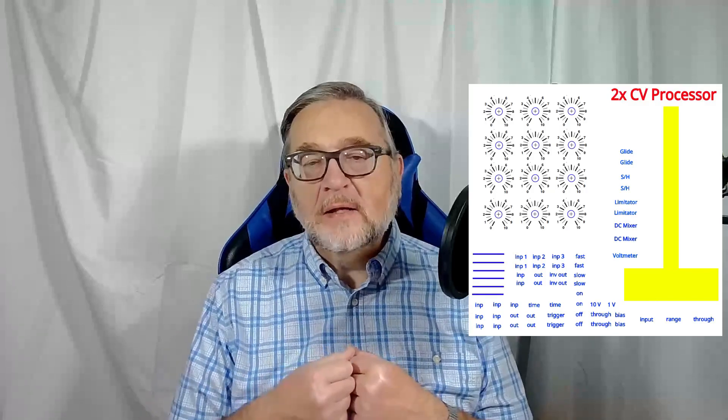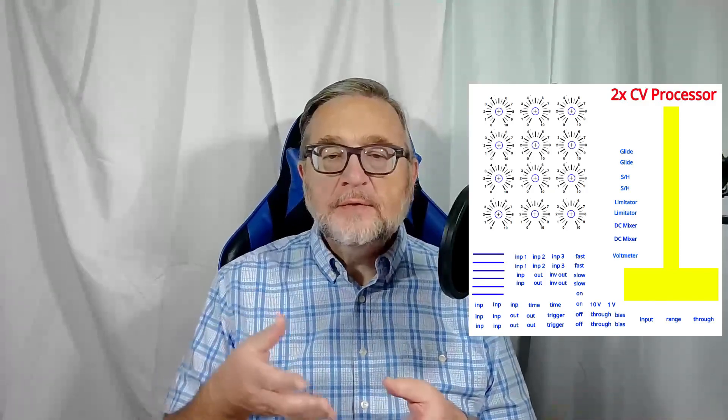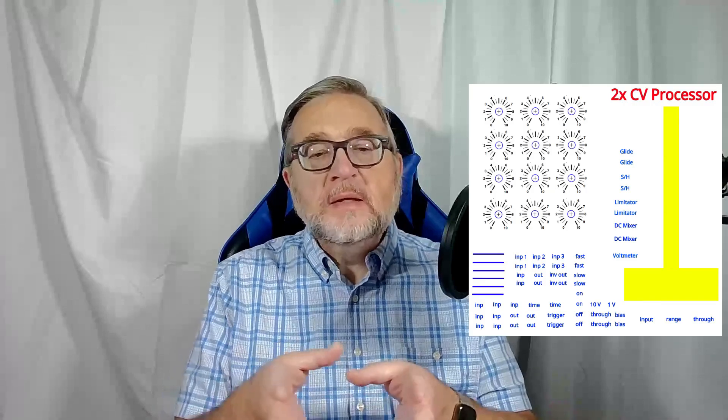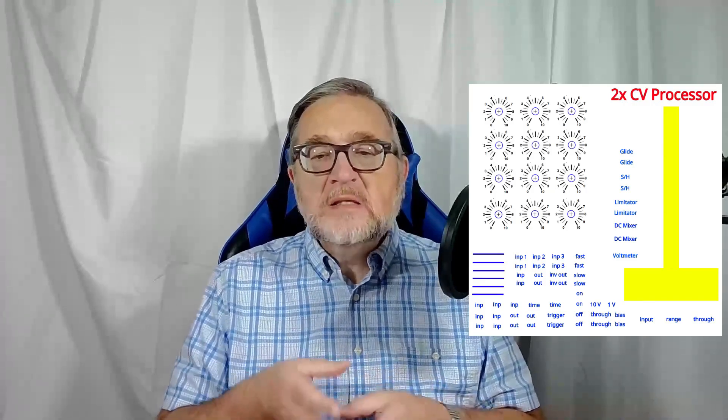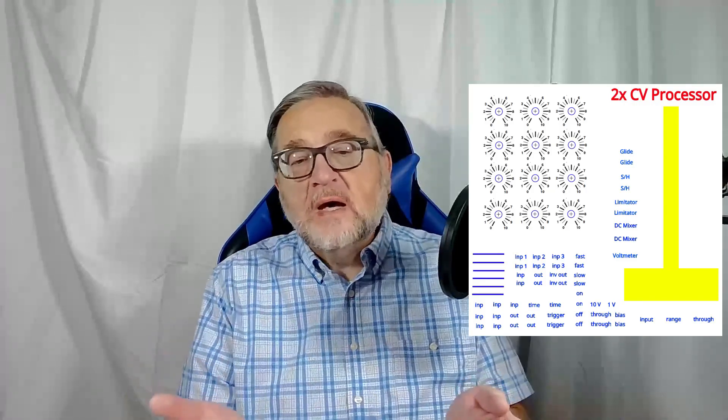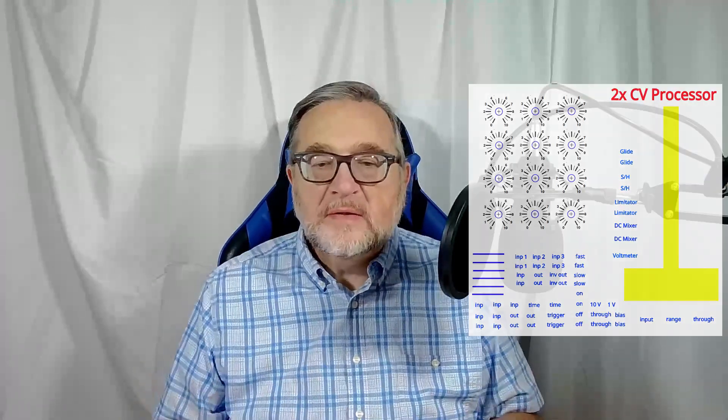Since the panel is big and relatively complex, I decided to avoid printing a huge decal with all the drawings for the panel. Instead, I prepared independent decals to be cut out of the decal sheet and to be positioned one by one on the front panel. Note the big yellow decal which identifies the voltmeter and at the same time divides the panel in the left and the right sides to clearly isolate all the duplicated elements.